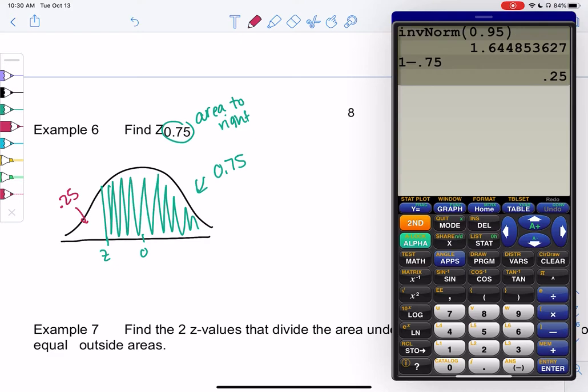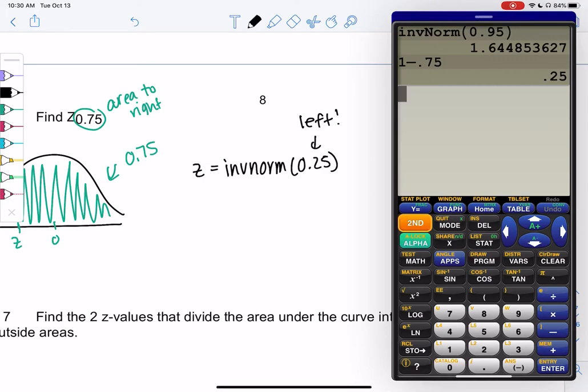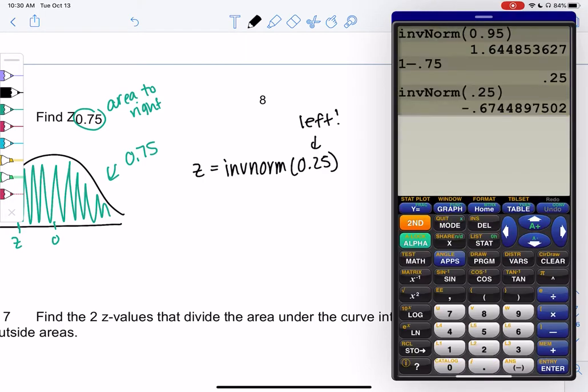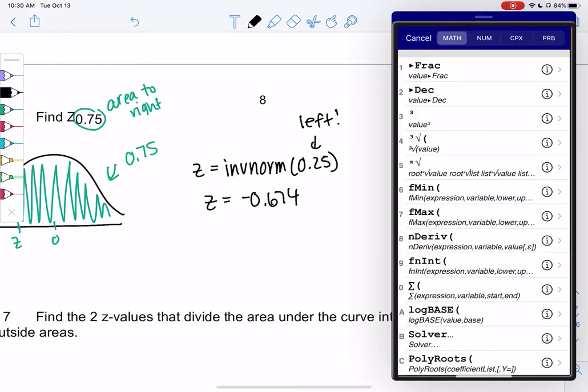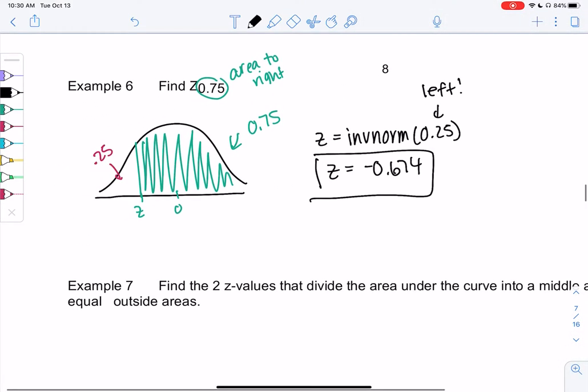So the area to the left would be 0.25, 1 minus 0.75, and so when we do inverse norm we just use the left side. We will do z equals inverse norm of 0.25. Second distribution, inverse norm, 0.25, and we get a z-score of negative 0.674. That makes sense because 0 is in the middle, so this side is negative and this side is positive.